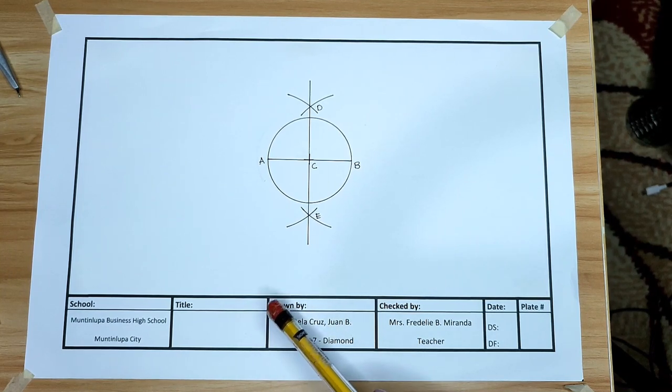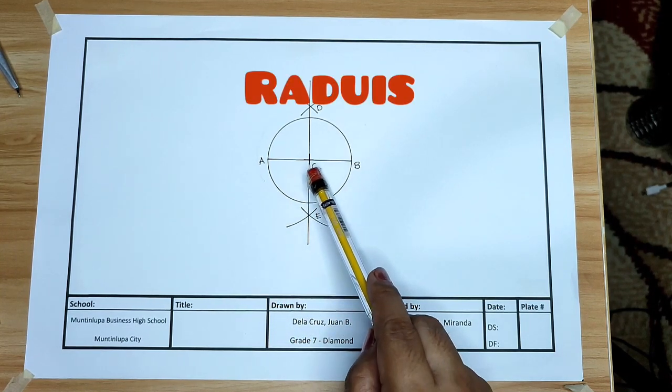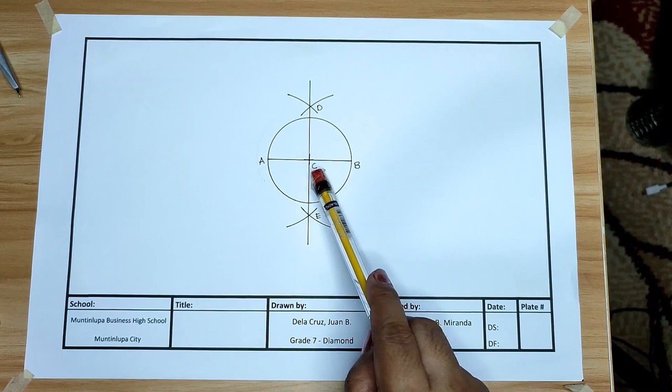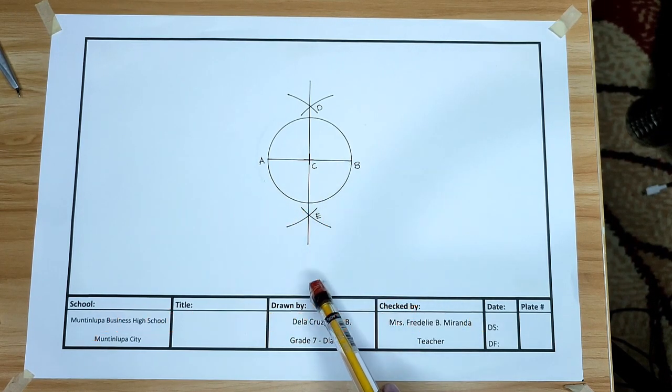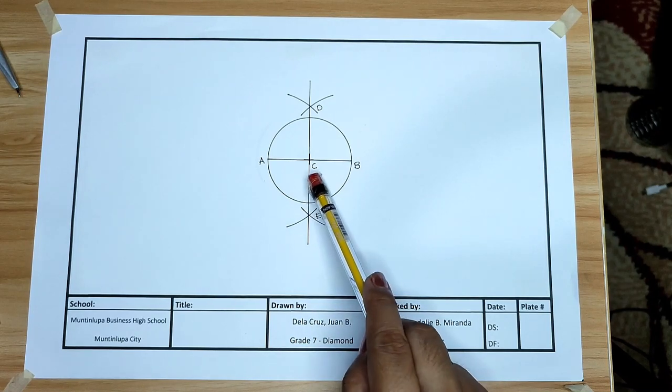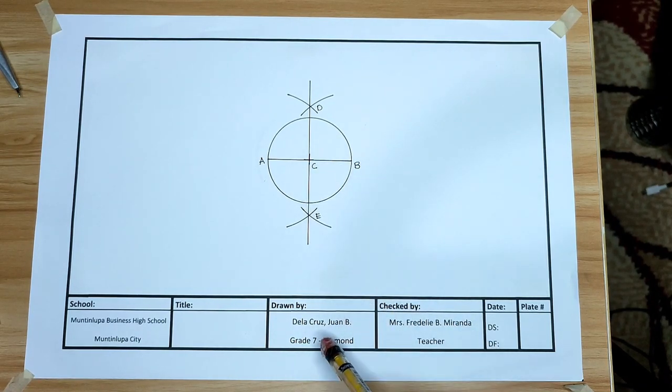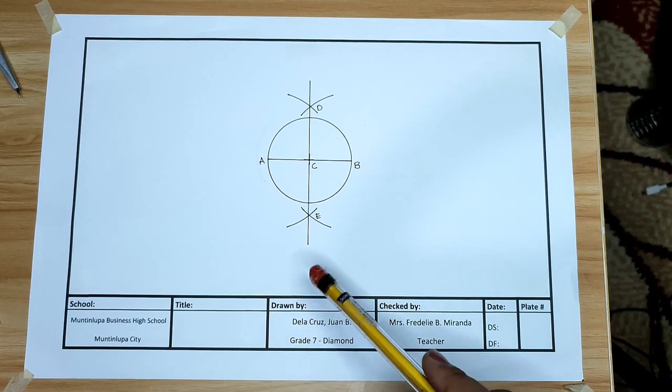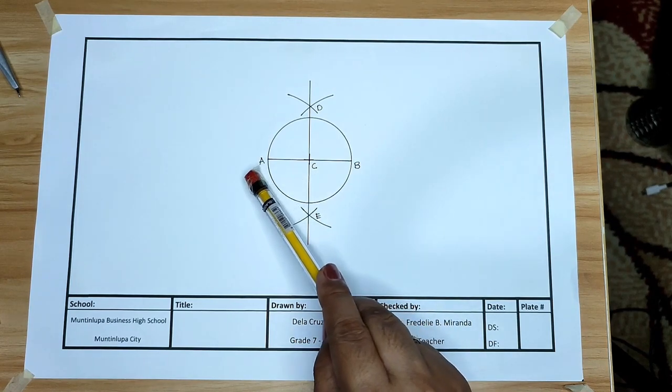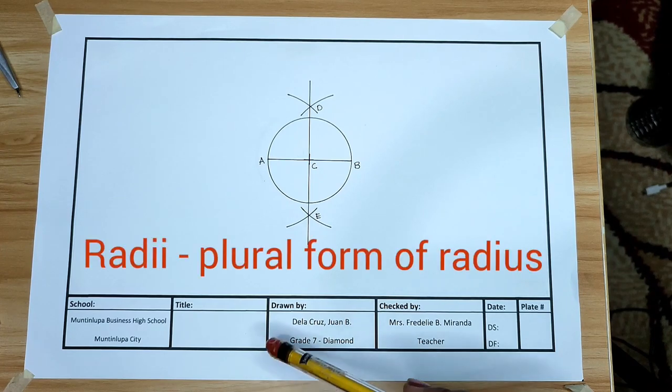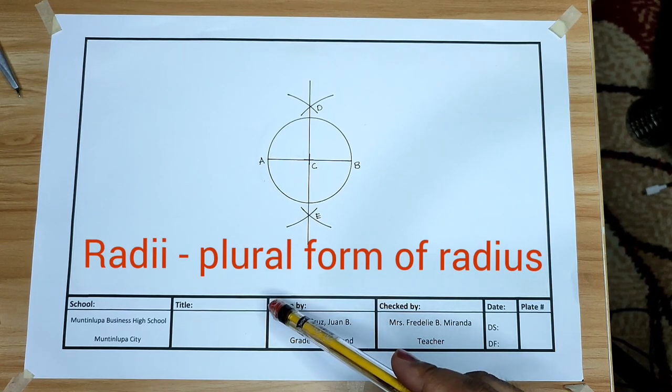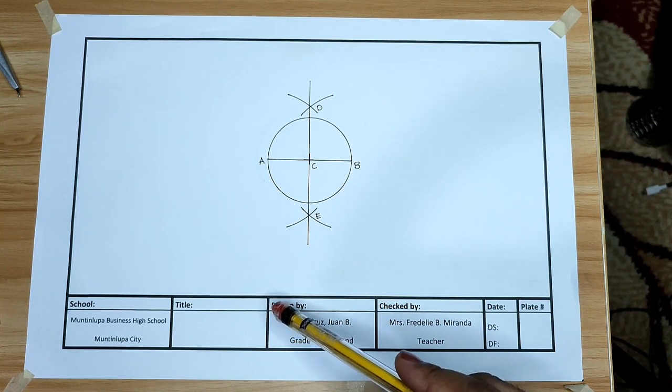Next is radius. A line from the center to any point on the circumference. For example, point C and B, point C and A. Radii, that is the plural for radius. Two or more radius.